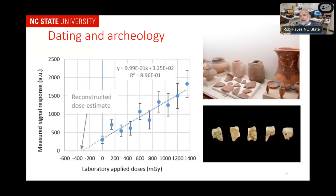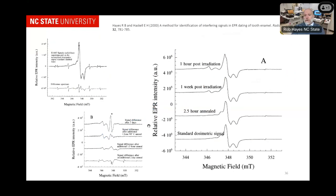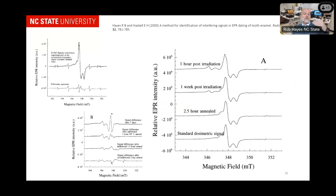This has also been used for dating in archaeology — which comes back again to forensics. With archaeology, you can see that there are signals that are transient, and if they're transient, you can see if something was recently irradiated or not. I have a student doing his dissertation on this, and he has unpublished results showing that you can figure out how long ago something was irradiated just by looking at multiple transient signals that are present. This was published in Radiation Measurements.